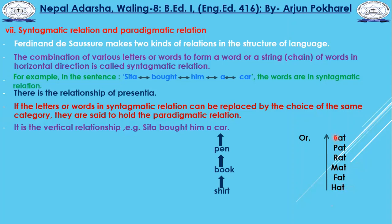The relationship between letters S and A, A and T within a word — that is syntagmatic relation, as they appear together horizontally. The relationship between 'sat' and 'pat,' 'pat' and 'rat,' 'rat' and 'mat,' 'mat' and 'fat,' 'fat' and 'hat' — this type of relationship is paradigmatic relation.